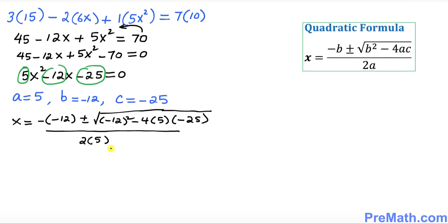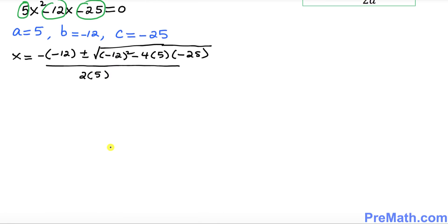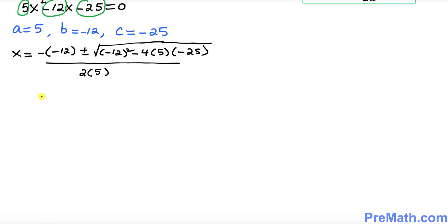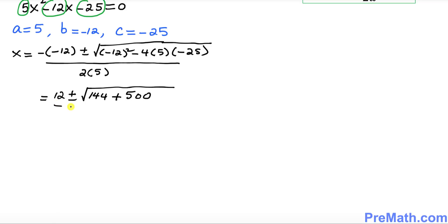Simplifying: the negative of negative 12 gives positive 12. Inside the square root: negative 12 squared is positive 144, and 4 times 5 times 25 gives 500, so we have 144 plus 500 equals 644. The expression becomes 12 plus or minus the square root of 644, divided by 10.